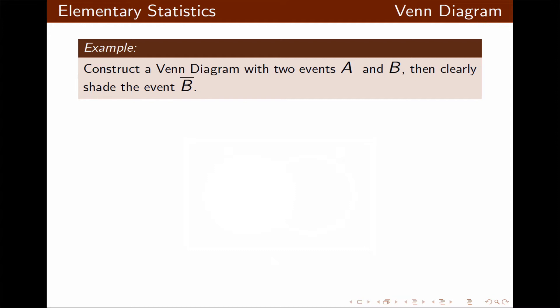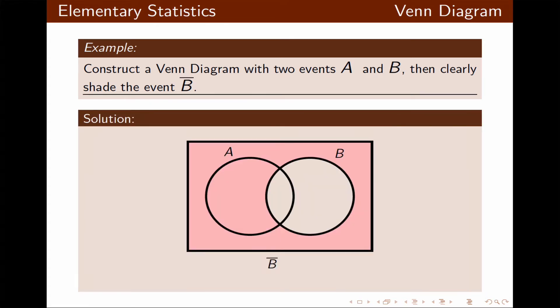Now let's make a Venn diagram with two events A and B and clearly shade the event not B, or B complement. Not B or B complement will be everything outside of B. As you can see, B is not shaded but everything outside of B is shaded, which includes part of event A.